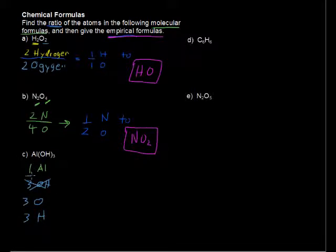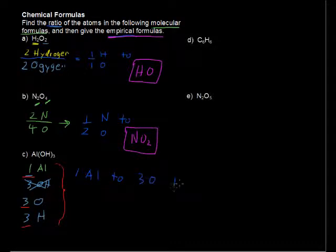Into one, three, and three. Well, it's just one. So the ratio is going to stay the same. We're going to have this same ratio of one aluminum to three oxygen to three hydrogen.